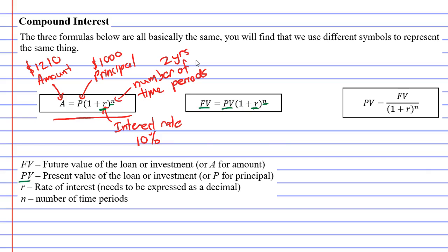So PV stands for present value, which when you think about it is like the original value, which is what principal is all about. It's the original amount of money you invest.